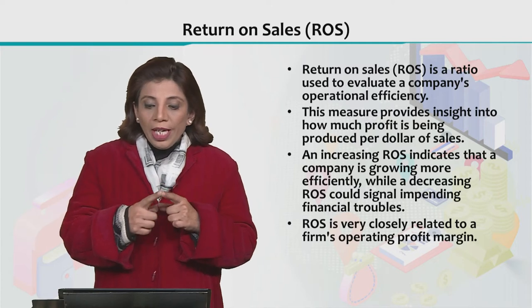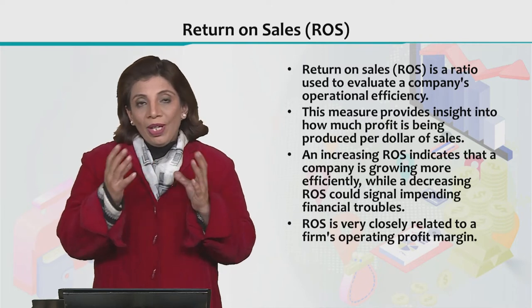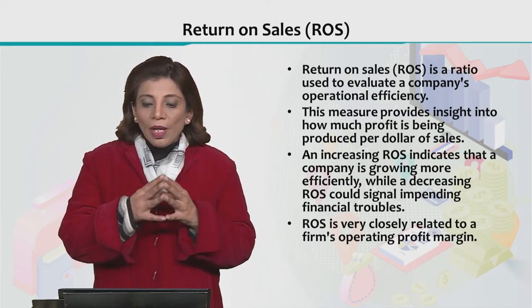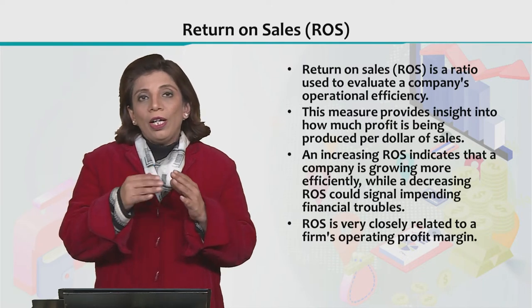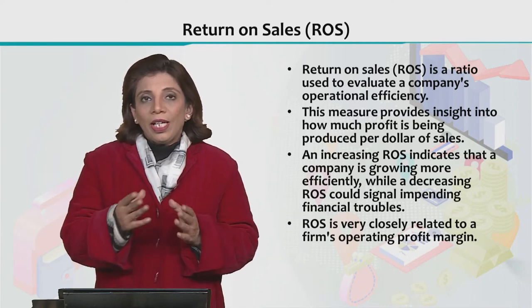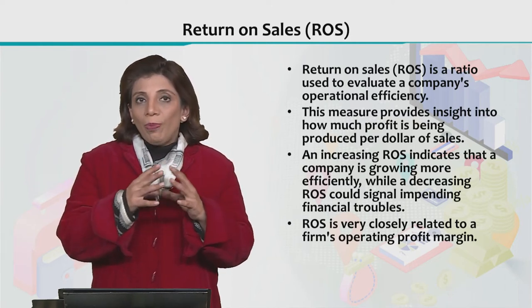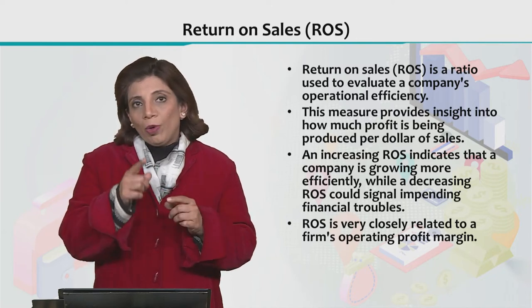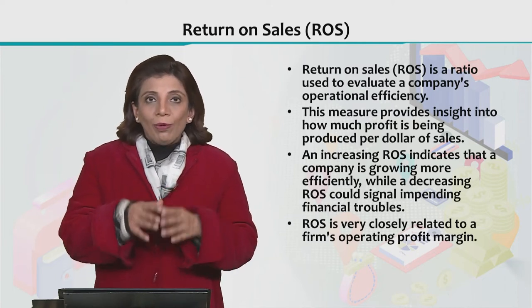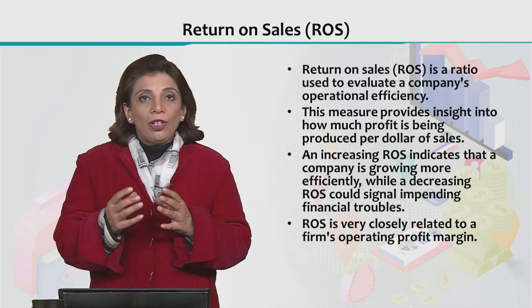An increasing ROS indicates that the company is growing more efficiently. If your ROS is increasing, it means you are growing efficiently. If there is a decrease or fall in your ROS — for example, last time it was 8%, now it is 7% or 6% — it means that the company has some financial issues or problems. Overall, ROS provides information about a company's financial health and is an important concept related to operating profit margin.